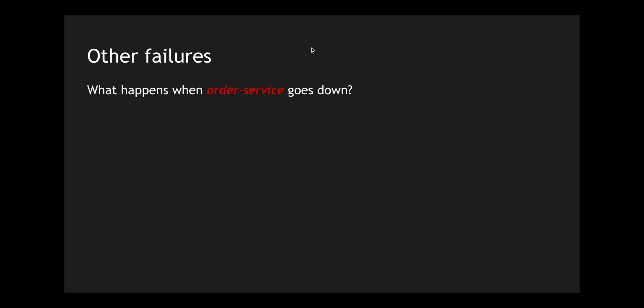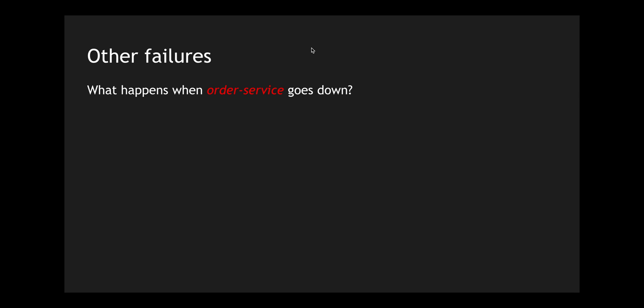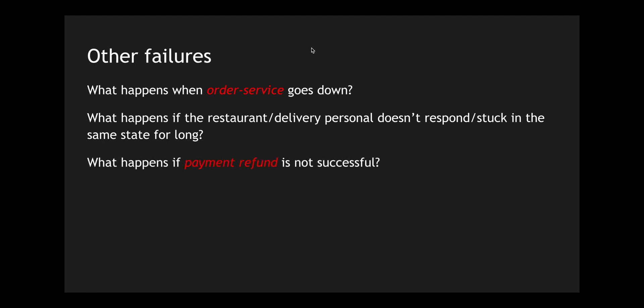There are many different failure scenarios in this architecture. What if the entire order service goes down across all regions? The order will get stuck because the order service orchestrates the whole workflow. What if the restaurant or delivery personnel doesn't respond, and the order is stuck in the same state for a long time? What if the payment refund is not successful even after automation? What if the tracking service did not remove the tracker, leaving the user still seeing the delivery executive's location? These are failures that self-compensating transactions address.